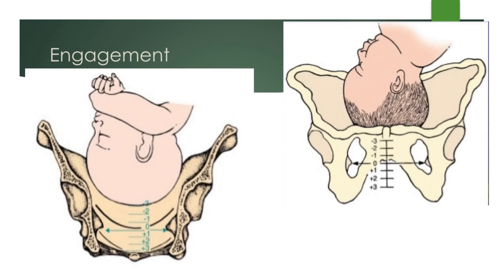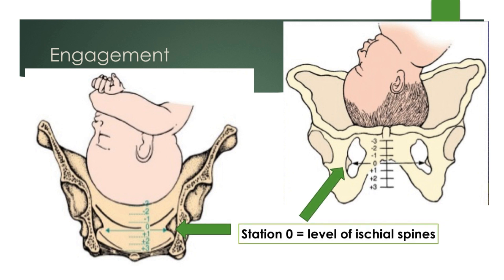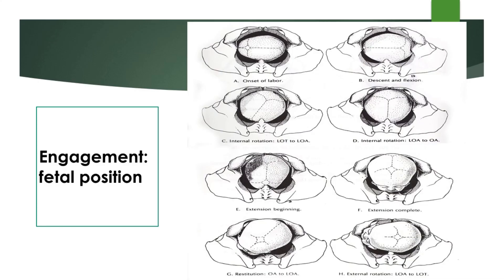To emphasize: station zero is at the level of the ischial spines. During engagement, the fetal position is either left occiput transverse or right occiput transverse, and sometimes in an oblique position as well.